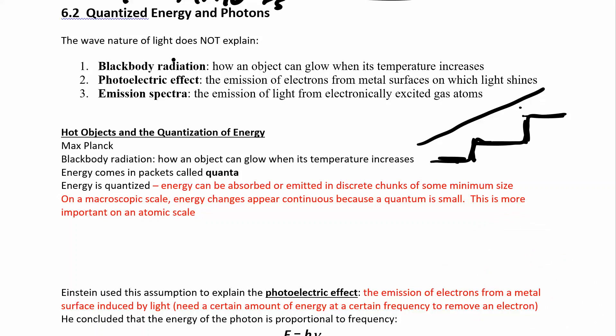So again, three things that can't be explained by classical physics: black body radiation, it's just saying that things glow when they heat up, not explained by classical physics, quantum mechanics can explain this. We're not going to go into the math on this one.